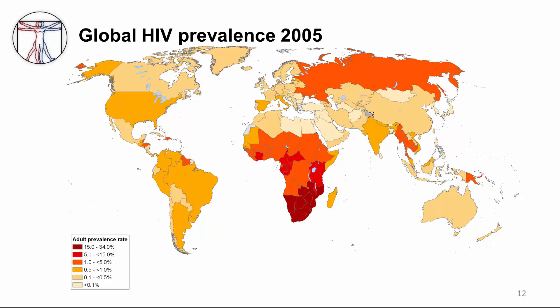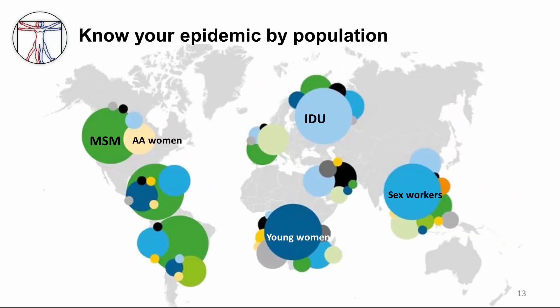AIDS is the fourth leading cause of deaths worldwide. The cell populations affected by the HIV epidemic varies depending on the area of the world you look at. In North America, men who have sex with men and African-American women are predominantly figured in the epidemic currently. In Europe, injection drug users. In sub-Saharan Africa, young women, and in Southeast Asia, sex workers are prominently featured in the epidemic. These are important for public health interventions.